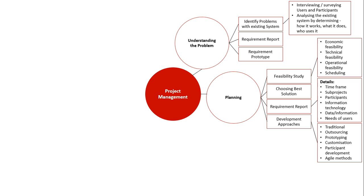The final thing in this section is development approaches. This topic follows the traditional system development lifecycle, though other types are available. Specifically: outsourcing, where people outside the organisation make parts of the system; prototyping, where we constantly build, manipulate, and evaluate a model until we get a perfect version; customisation, where we tweak the existing system to suit new needs; participant development, working with the people who use the system in generating the new system; and agile methods, a very unstructured approach where small teams all work on different parts of the system.